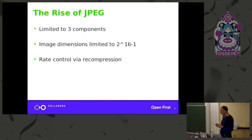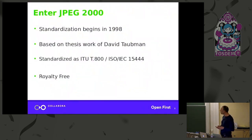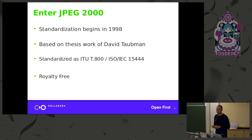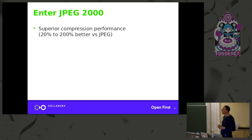Those were the limits that gave rise to JPEG 2000, which was supposed to address these limitations and also added a whole bunch of new features. Only six years after JPEG was standardized, they began to standardize JPEG 2000. It was based on the thesis work of David Taubman. It is royalty-free — Taubman actually donated his IP to make sure of that. JPEG 2000 has up to 200% better performance than JPEG, meaning smaller images for the same bit rate or signal-to-noise ratio.